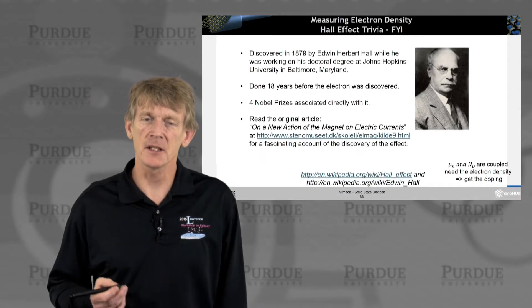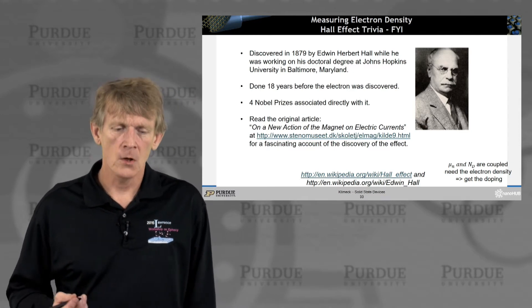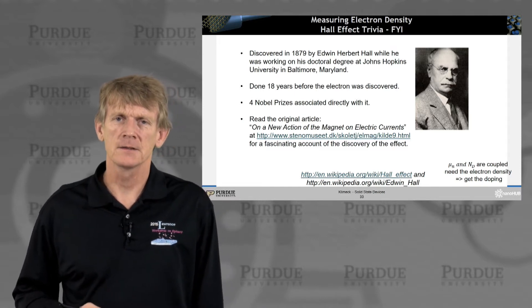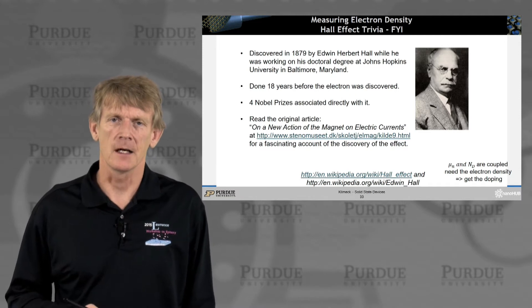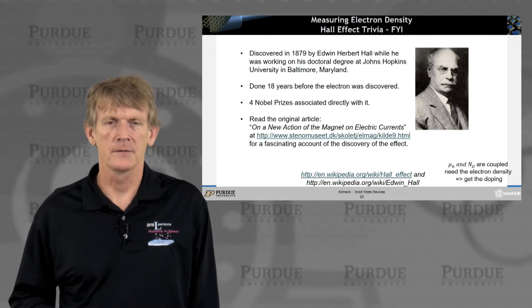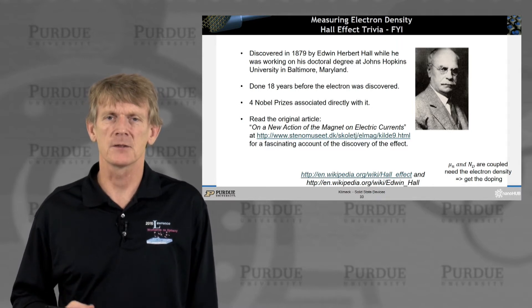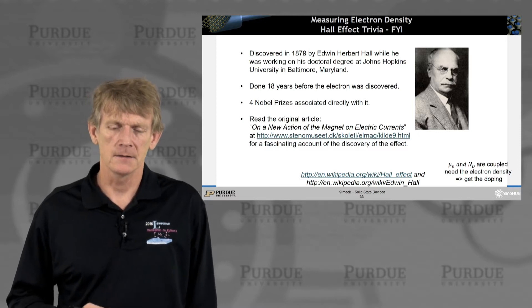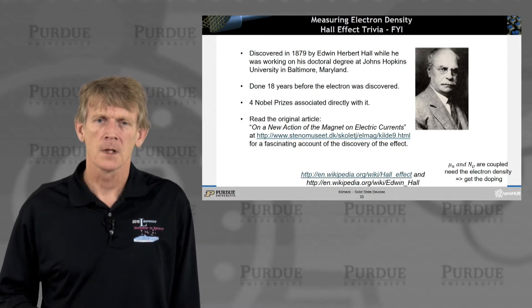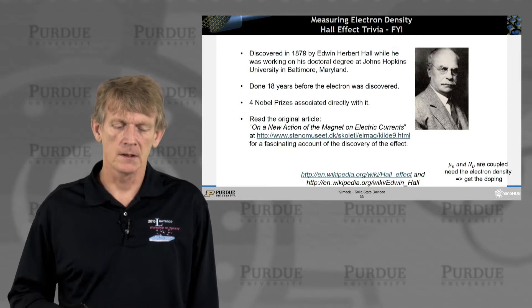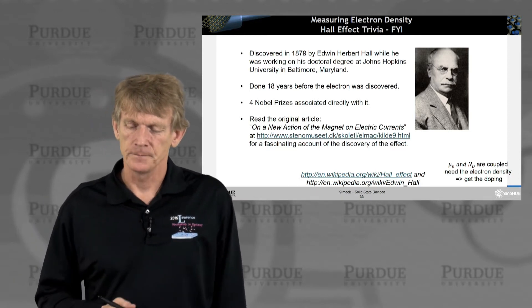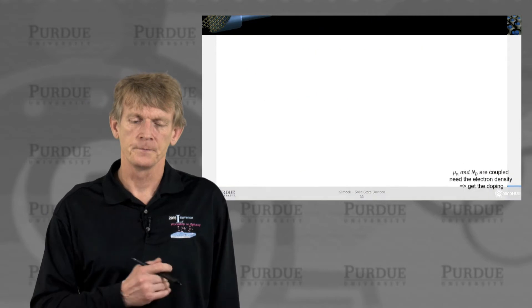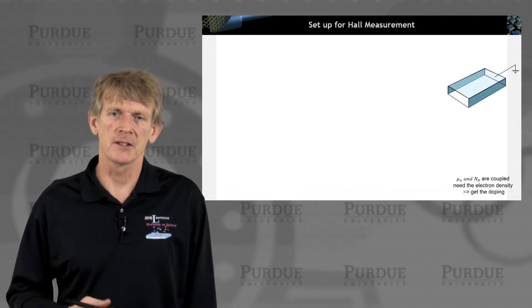Here's a tidbit of trivia. Edwin Hall, while working on his PhD at Johns Hopkins, discovered this effect in 1879. This is a significant number of years, 18 years before the electron was discovered, and the Hall effect has been associated with four Nobel prizes that really enabled subsequent work. There's an interesting article here that I'm referencing. Again, we are after calculating, obtaining the number of electrons in the system. Let's see what this measurement has looked like.